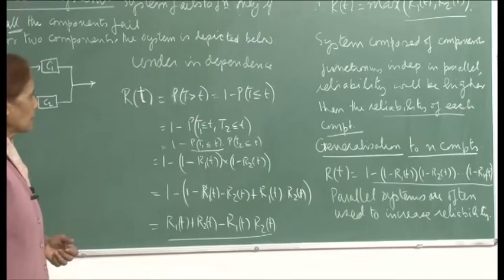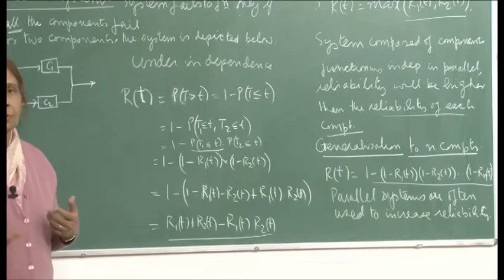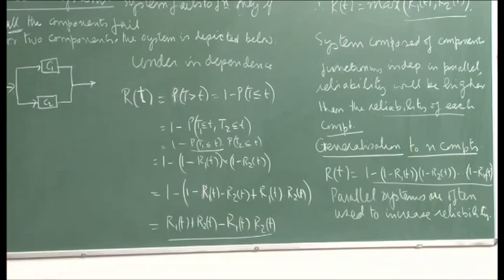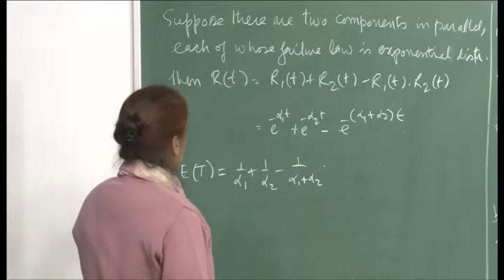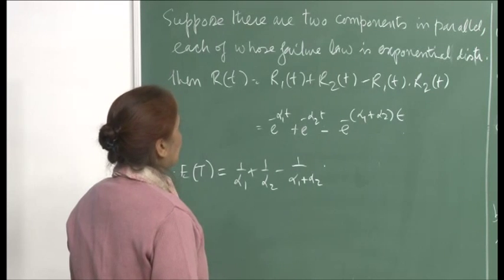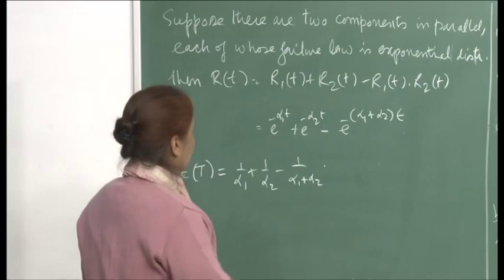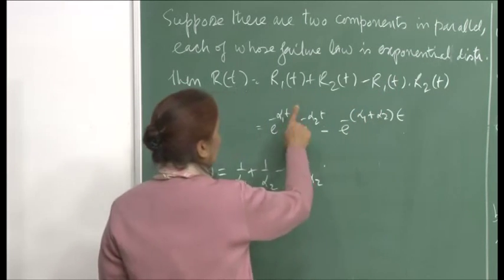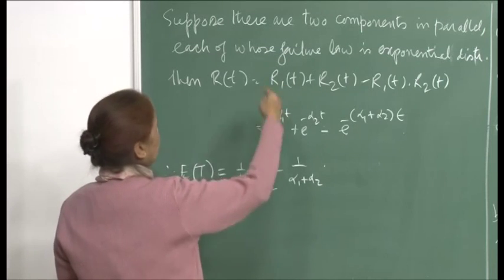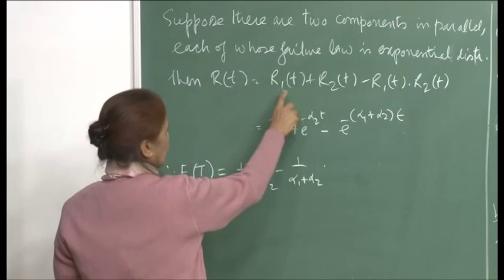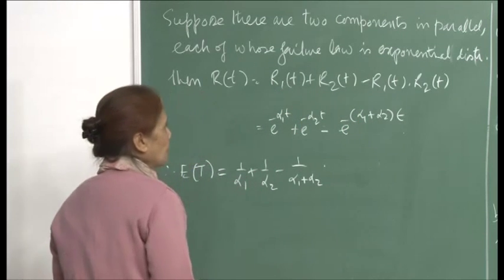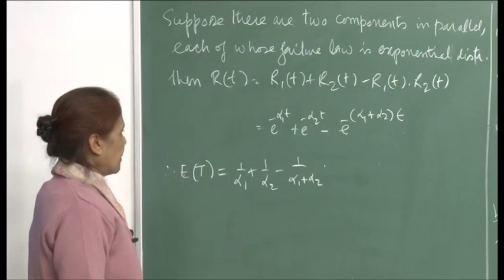I will show some more examples of systems with components arranged in different orders. Consider two components in parallel, each whose failure law is an exponential distribution with parameters α1 and α2 respectively. The reliability of the system, since they are in parallel, is given by the formula: r(t) = r1(t) + r2(t) − r1(t)·r2(t).